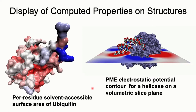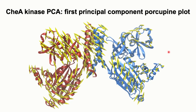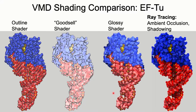Here is an example of a surface colored by solvent accessibility and electrostatic potential. Another example shows a principal component analysis where you can get a porcupine plot depicting the movement of a protein. VMD also supports different types of materials — from typical shaders to cartoonish or more realistic styles — as well as advanced rendering techniques like ray tracing.